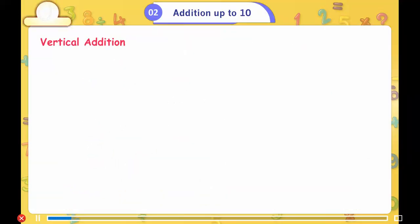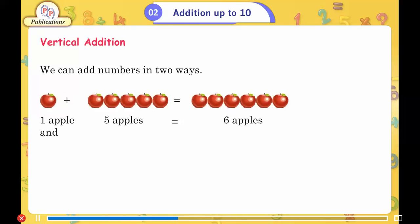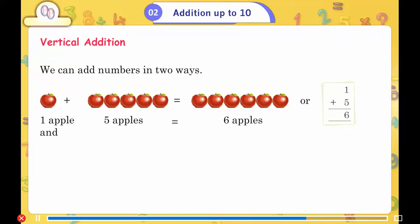Vertical addition. We can add numbers in two ways. 1 apple and 5 apples is equal to 6 apples, or 1 plus 5 is equal to 6.